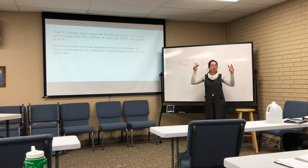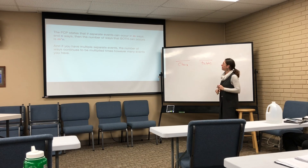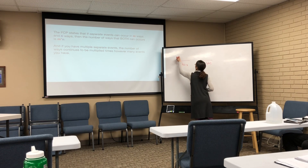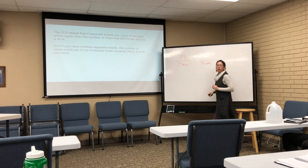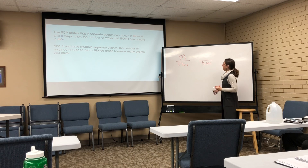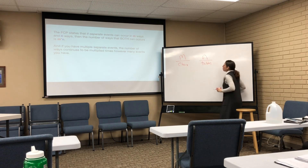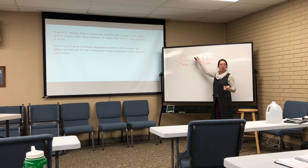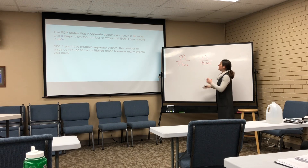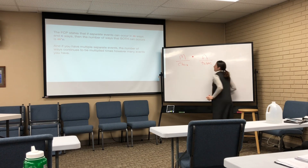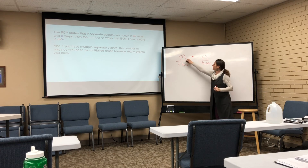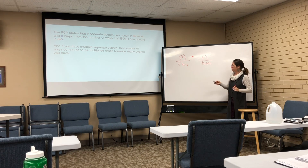The generic form states that if you have something that can occur in N number of ways, and you have another separate something that can occur in N number of ways, the total ways they can be combined is through multiplication — N times N.